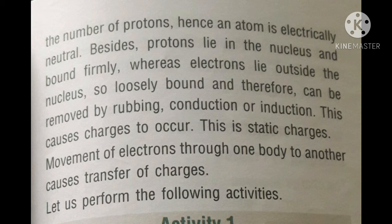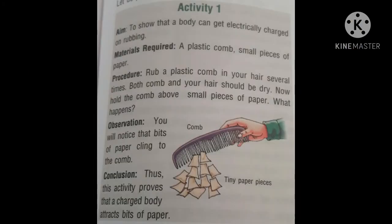Movement of electrons from one body to another causes transfer of charges. Activity 1: The aim is to show that a body can get electrically charged on rubbing. Take a plastic comb and small pieces of paper. Rub the plastic comb in your hair several times — both comb and hair should be dry. Hold the comb above the small pieces of paper. Observation: bits of paper cling to the comb. Conclusion: a charged body attracts bits of paper. You can try this with a plastic scale also.